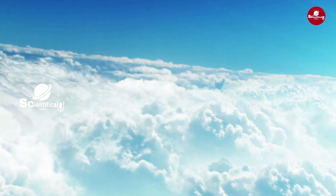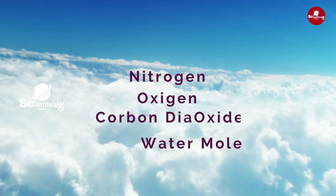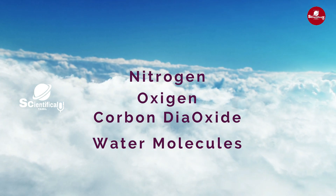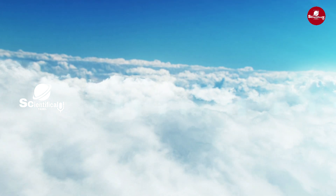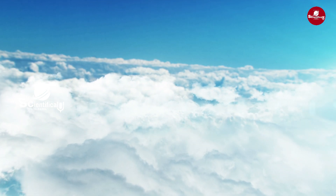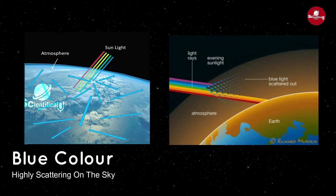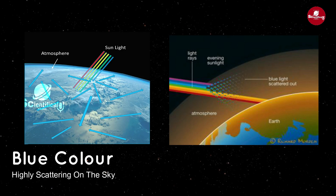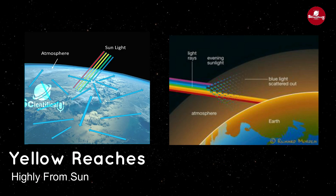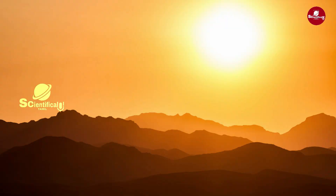There is all the atmosphere: nitrogen, oxygen, carbon dioxide, and water molecules. This is the light on the moon. This is the color of the blue light, so we know the yellow color.